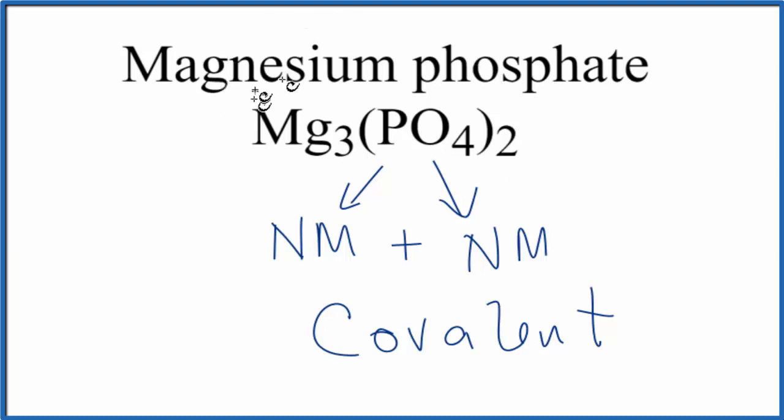This is Dr. B, discussing whether magnesium phosphate, Mg3(PO4)2, is ionic or covalent. Thanks for watching.